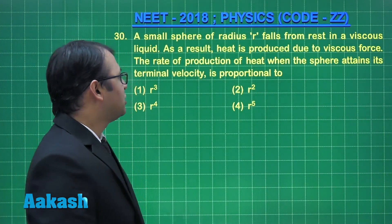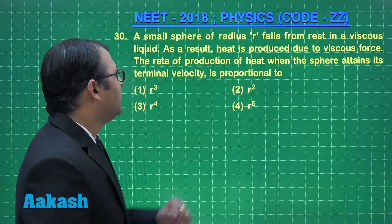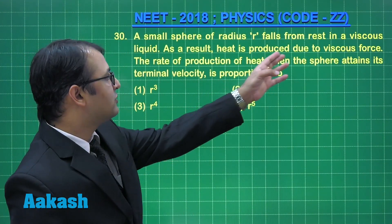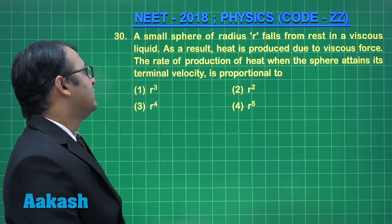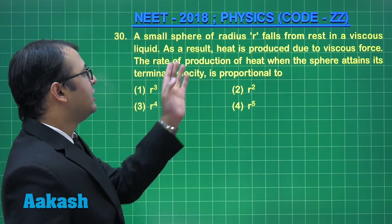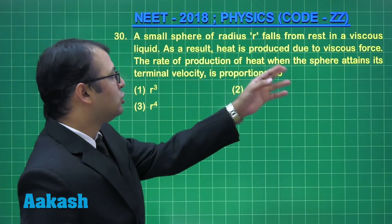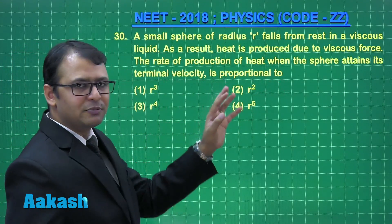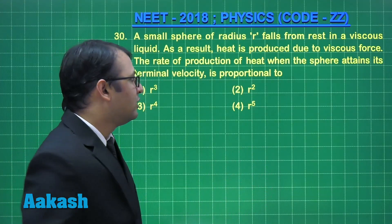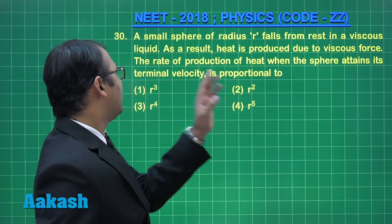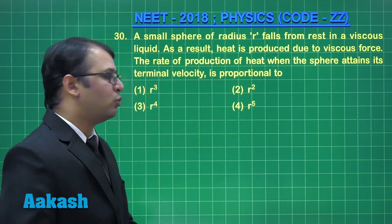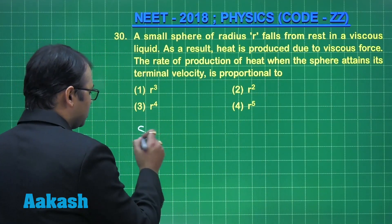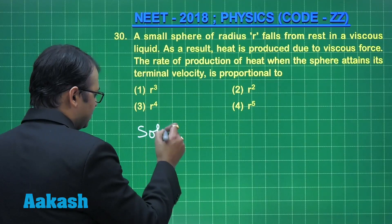Let's start from question number 30. A small sphere of radius R falls from rest in a viscous liquid. As a result, heat is produced due to viscous force. The rate of production of heat — that is, basically power — when the sphere attains its terminal velocity, is proportional to what? Here are the options. Let's solve them.